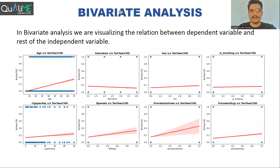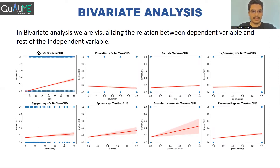After the univariate analysis, we started with the bivariate analysis. We tried to find out whether there is any linear relation between all the independent features and the target variable. For age versus 10-year CHD, the red line shows the regression line between these two variables. We see that age is positively correlated with the target variable — if the age of a person increases, then the risk of heart disease increases, which is also intuitive.